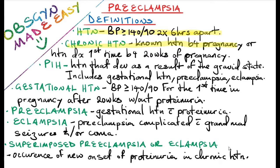Chronic hypertension is hypertension before pregnancy or hypertension diagnosed for the first time before 20 weeks of pregnancy. Pregnancy-induced hypertension is a hypertension that develops as a result of the gravid state. It includes gestational hypertension, preeclampsia, and eclampsia. Gestational hypertension is a blood pressure of more than 140 over 90 for the first time in pregnancy after 20 weeks without proteinuria.